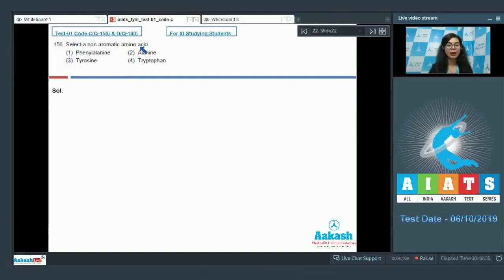Question 156, select a non-aromatic amino acid: phenylalanine, alanine, tyrosine, tryptophan.